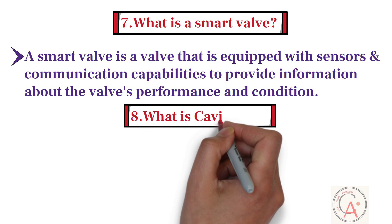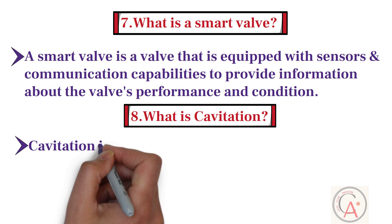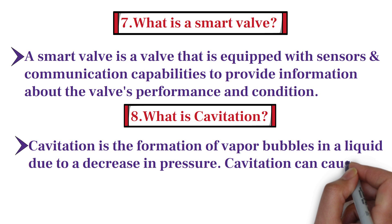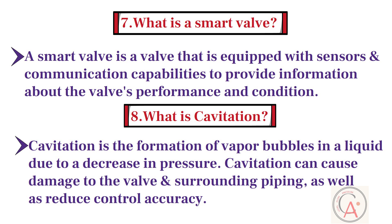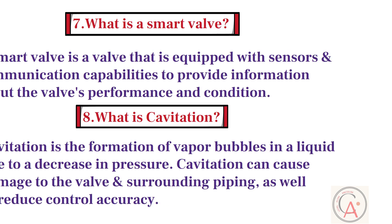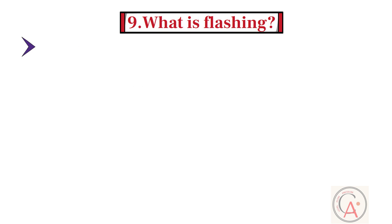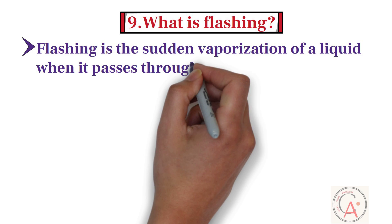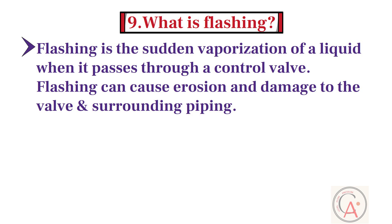Eighth question: what is cavitation? Cavitation is the formation of vapor bubbles in a liquid due to a decrease in pressure. Cavitation can cause damage to the valve and surrounding piping, as well as reduce control accuracy. What is flashing? Flashing is the sudden vaporization of a liquid when it passes through a control valve. Flashing can cause erosion and damage to the valve and surrounding piping.